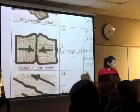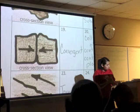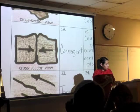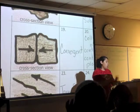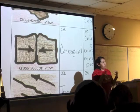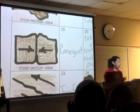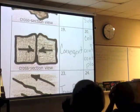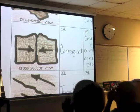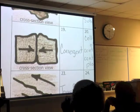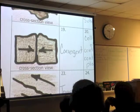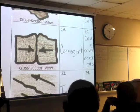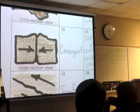Do all the convergent boundaries take the same amount of time? They don't all move exactly the same, but they all move approximately 1 to 10 centimeters a year. So it does not take the same amount of time.